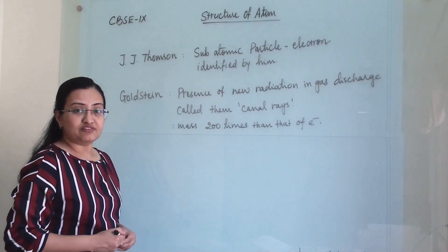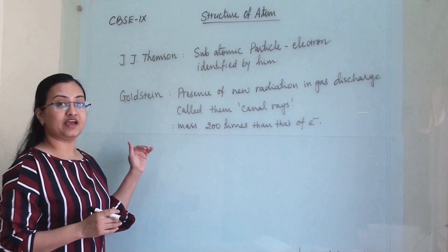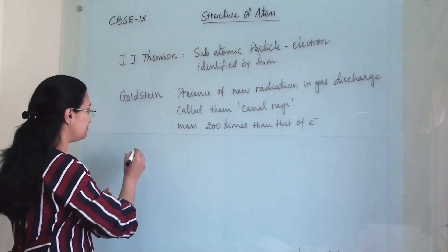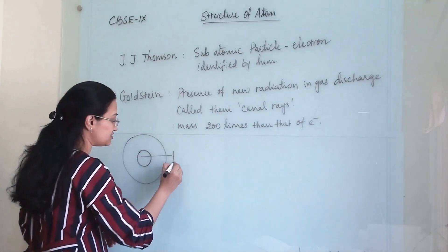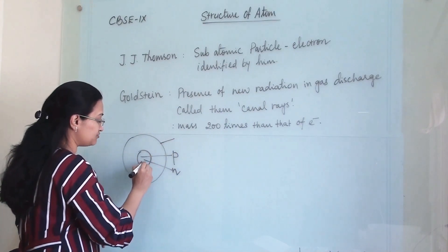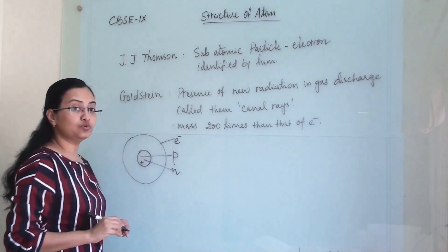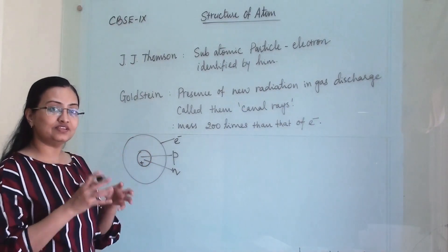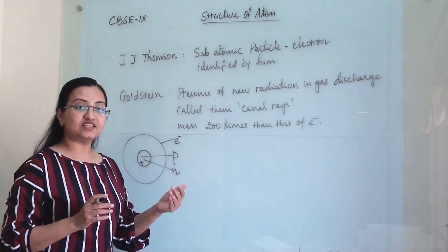We will first discuss two scientists who, after Dalton's theory, discovered two subatomic particles of atom. A subatomic particle is a particle found within the atom. In the nucleus, there are protons and neutrons, and because of the positive charge in the nucleus, the electron rotates around the nucleus. These are all called subatomic particles because they are within the atom.